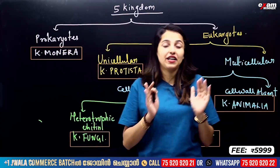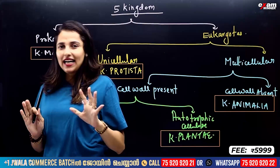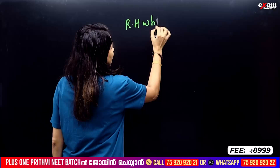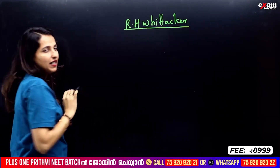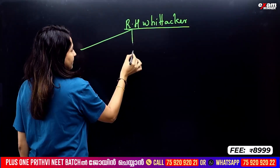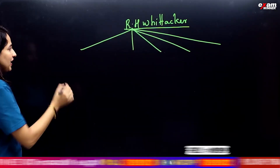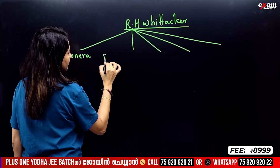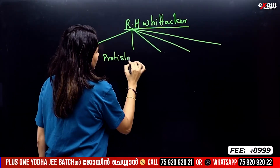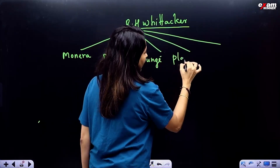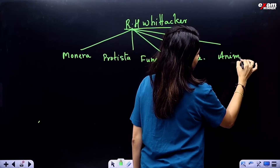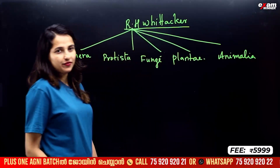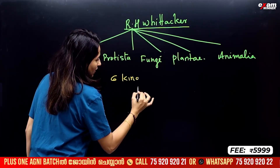First we have Kingdom Monera — prokaryotes. Then Kingdom Protista — unicellular eukaryotes. Then Kingdom Animalia — multicellular eukaryotes, cell wall absent. Then Kingdom Fungi — multicellular eukaryotes, cell wall present with chitin. Then Kingdom Plantae — multicellular eukaryotes, autotrophic. Then we have five kingdoms. Then we have a five kingdoms classification. We have a modification — we have five kingdoms. New natural bacteria — Monera, Protista, Fungi, Plantae, Animalia. We have five kingdoms. We have also added a kingdom — we have a six kingdom classification.